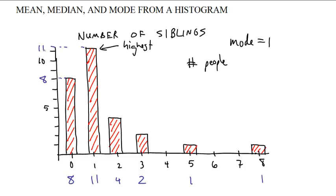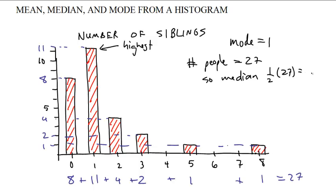There's eight, there's eleven, there's four, there's two, and these two are one. Anyway, you add these all up, and you see that there's a total of 19, 23, 25, 26, 27. The number of people is 27. So the median is half of that, right? Half of 27 is what, 13 and a half. Well, that's cool, because that means it's the 14th person.